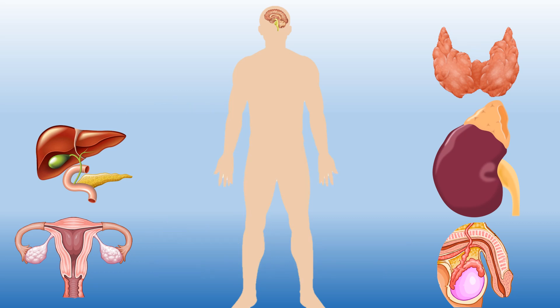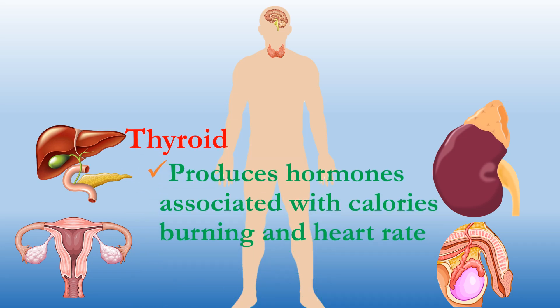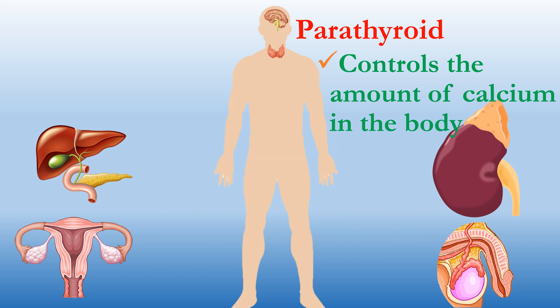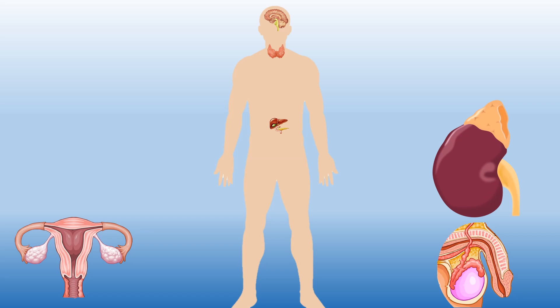Next we have the thyroid gland, which produces hormones associated with calorie burning and heart rate. Next is the parathyroid gland — the thyroid is a small butterfly-shaped gland, and the parathyroid consists of four small dotted structures associated with it. The main function of the parathyroid is to control the amount of calcium in the body.